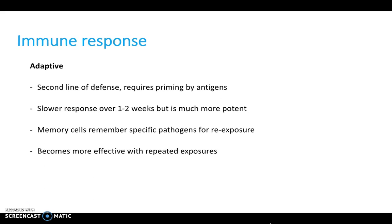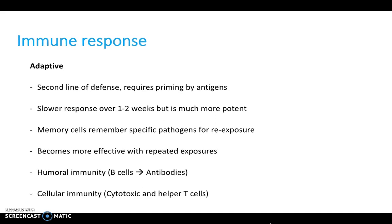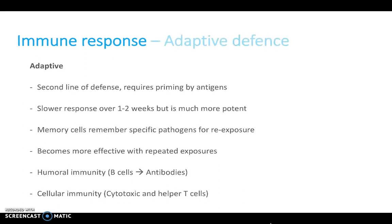We become more effective with repeated exposures and have two aspects: humoral immunity and cellular immunity. Humoral immunity is concerned with B cells and antibodies. Cellular immunity is all to do with cytotoxic — in other words killer — and helper T cells.